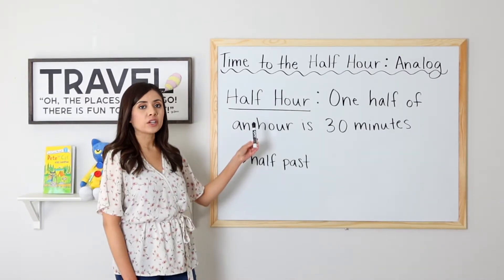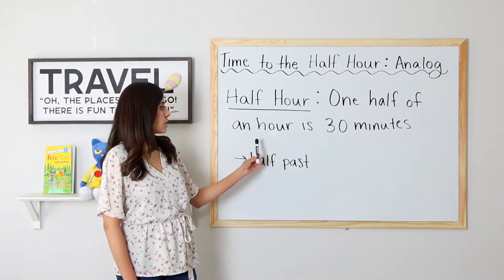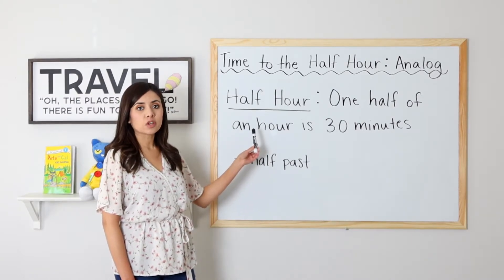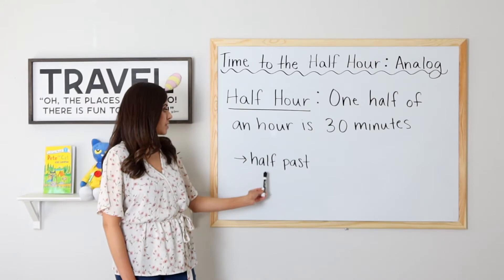Half hour. One half of an hour is 30 minutes. Half hour is also called half past.